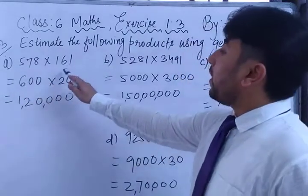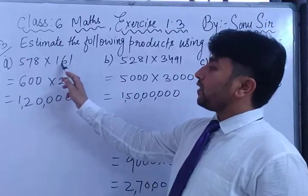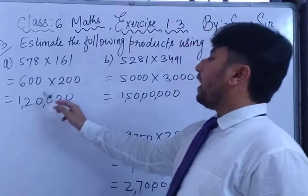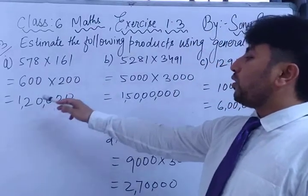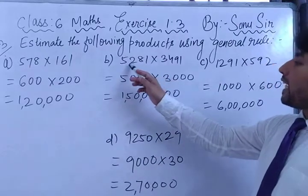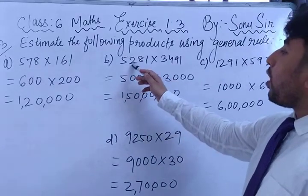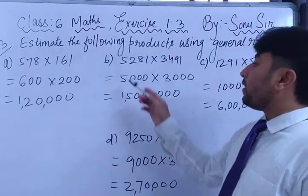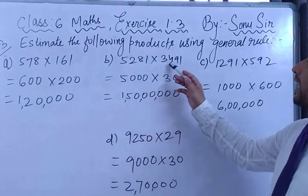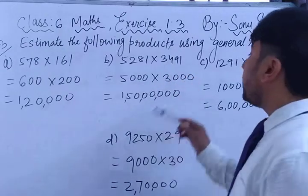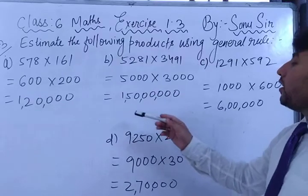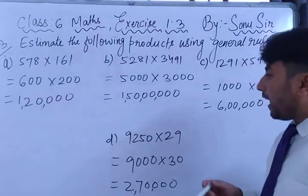For 161, since 6 is greater than 5, it directly becomes 200. So 6 × 2 = 12 with four zeros — 1 lakh 20,000 is the answer. In the second example, the second digit of 5281 is 2, which is less than 5, so the round figure value is 5000. The other number's second digit is 4, less than 5, so it rounds to 3000. 5000 × 3000 = 1 lakh 50,000.